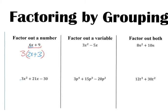For the next one, looking at all three pieces at once, I can again divide by 3. So I'm going to take a 3 out front. If I take a 3 out of 3x squared, I'm left with x squared. 21x divided by 3 is 7x. 30 divided by 3 is 10. That's a minus from that sign.